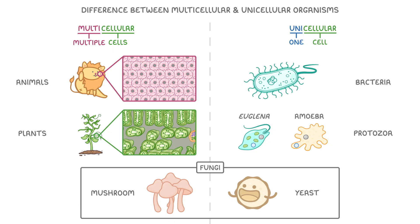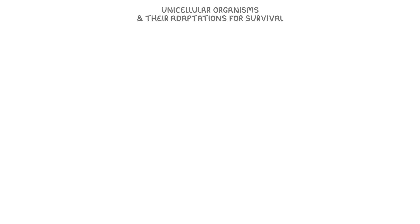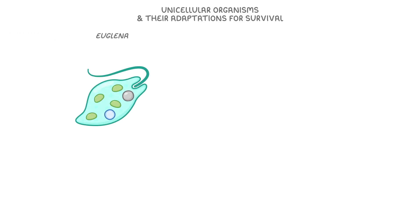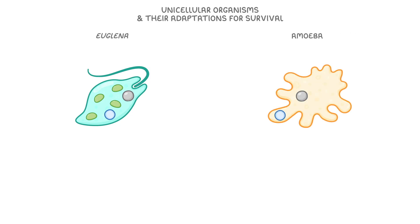So now that we know what the terms multicellular and unicellular mean, let's take a closer look at some examples of unicellular organisms and their adaptations for survival. We already mentioned that a couple of examples include an organism called euglena and another one called amoeba, and both of these are usually found in water. As we've got them side by side here, let's run through the similarities and differences between their subcellular structures and how those structures help them to survive.